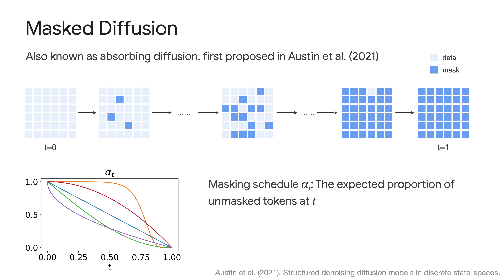This process is defined by specifying a masking schedule α(t), whose meaning is the expected proportion of unmasked tokens at time t. α(t) is a monotonic decreasing function from time zero to one. At time zero everything is unmasked — α(0) = 1, no mask tokens. At time one, everything is masked. There are many choices for this schedule: you can follow a linear schedule, go slower at the beginning and faster at the end, as long as it satisfies the monotonic property.